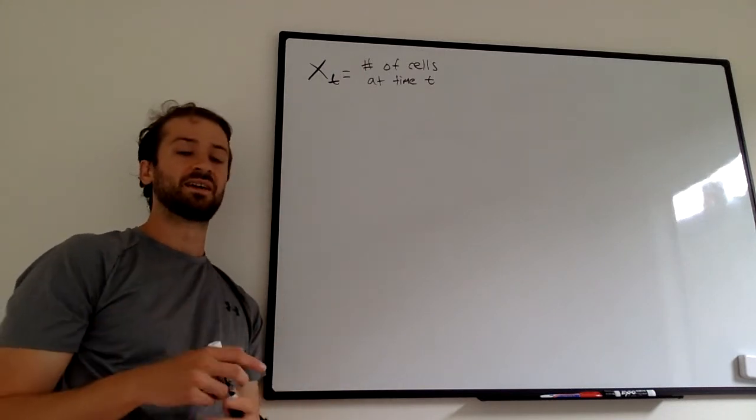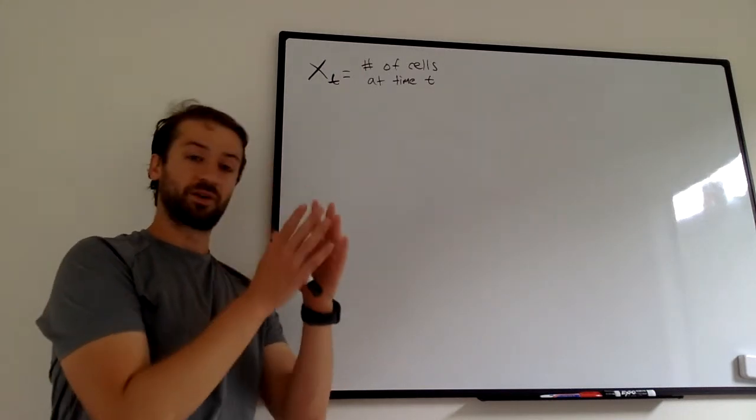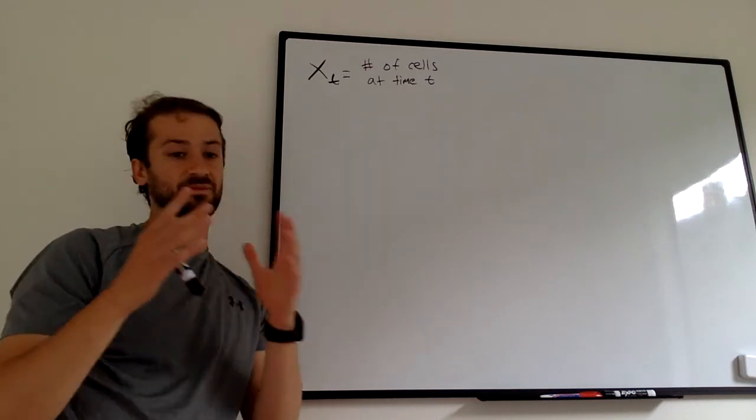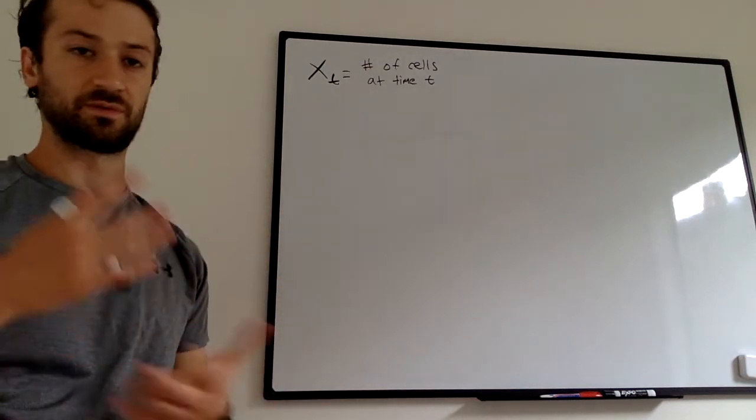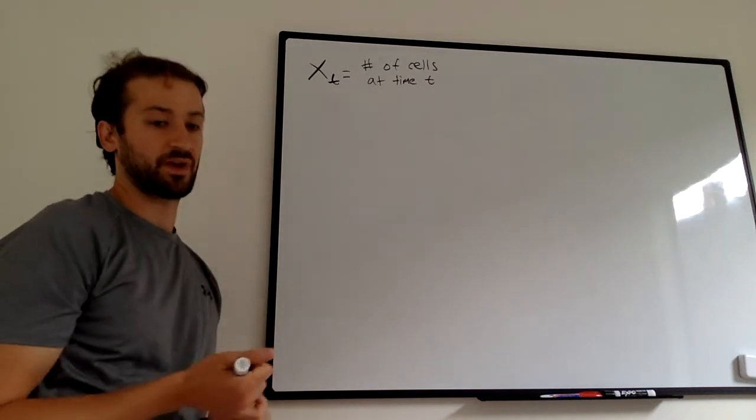So x sub t is the number of cells at time t. And as we're going to see, we start with a certain number, some will repopulate, some will not, and we're going to think about how that plays out over time.